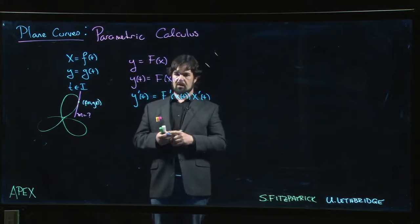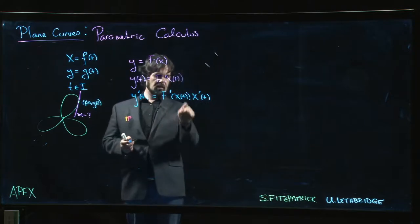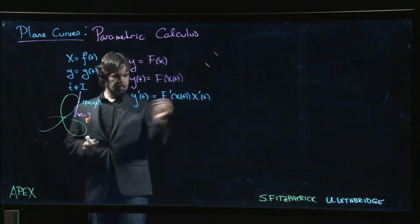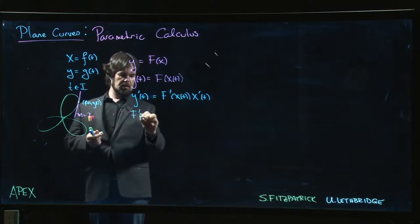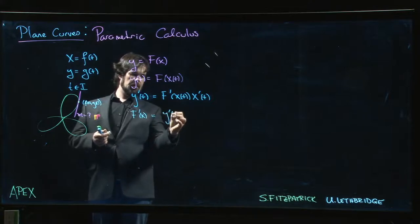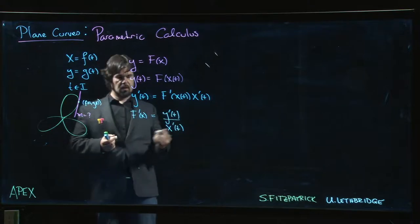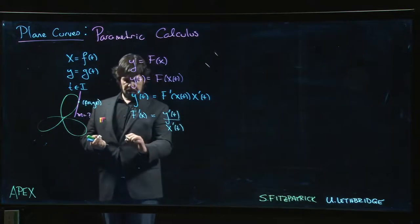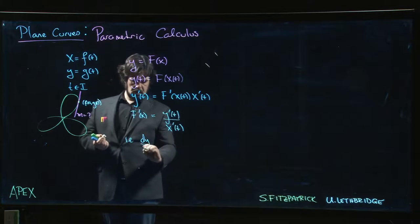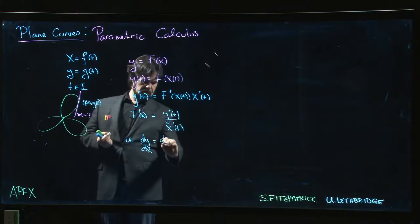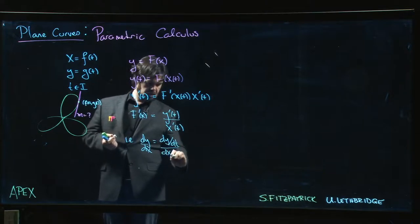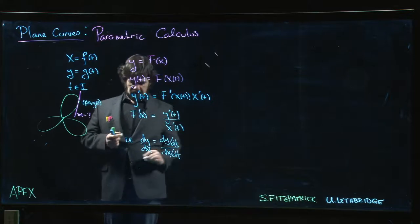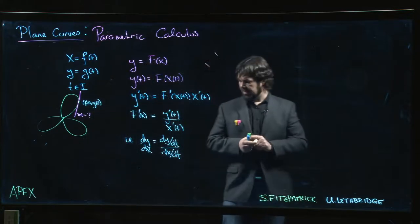But really what we're interested in here is we want F'(x). So forget about the dependence on t for a minute and notice that what this is telling me is that F'(x) is y'(t) divided by x'(t), or if you like, in Leibniz notation, dy/dx is equal to dy/dt divided by dx/dt.